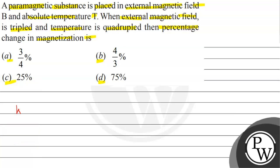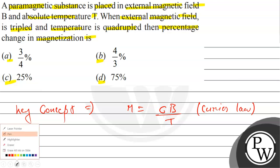Now our key concept will be Curie's law: M = CB/T. This is our key concept.